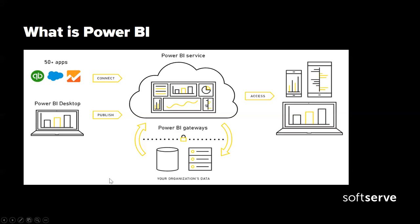There are a couple of main items in this diagram. First of all, these are the data sources. Power BI has a lot of different data sources, and each month with the Power BI release, additional data sources are added. You can see some data sources which are in beta version right now, and this list is growing every month. When connecting to data sources, we have three different methods: import data, direct query, and live connection.